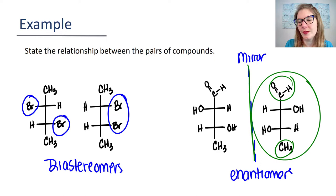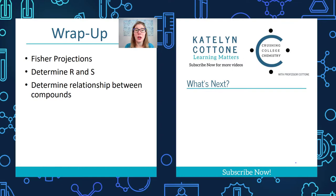In this video, we looked at Fischer projections, we determined R and S with Fischer projections, and you want to make sure that you can look at two compounds and decide what the relationship is between those compounds, no matter how those compounds are drawn. As always, thanks for your attention. This is Katoni signing out.